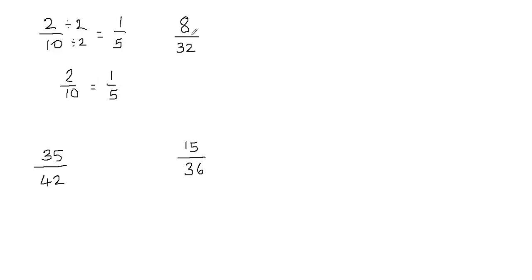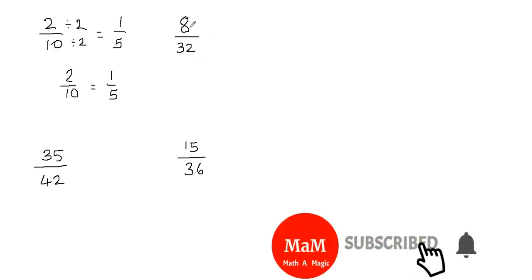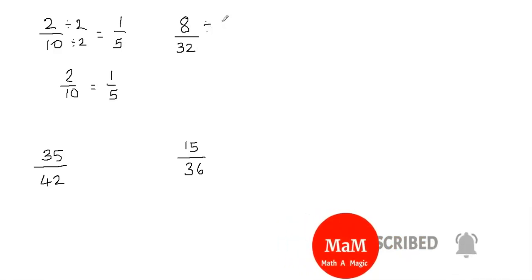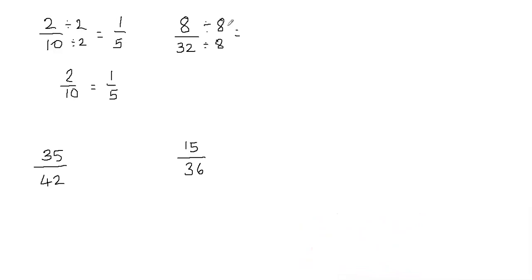Now let's take a look at this example: 8 divided by 32. All we need to do is think of the greatest number which can go evenly into 8 and 32. The greatest number which can divide into both 8 and 32 is 8. So I will divide my numerator and the denominator by 8 in order to reduce this fraction. 8 divided by 8 is equal to 1, and 32 divided by 8 is equal to 4. So 8 over 32 can be reduced to 1 fourth, and these are equivalent fractions.